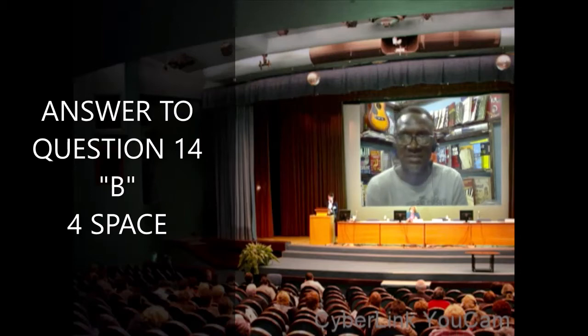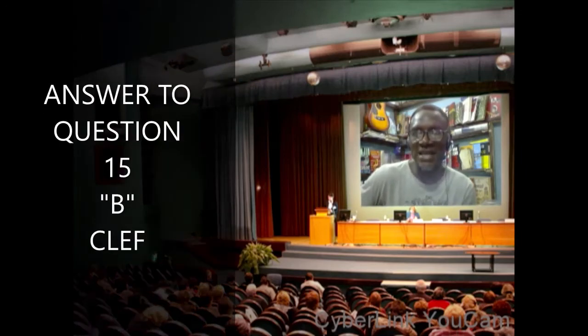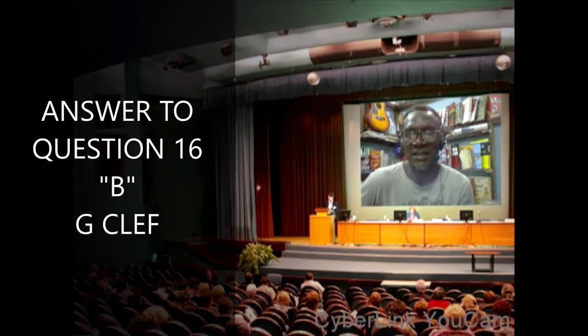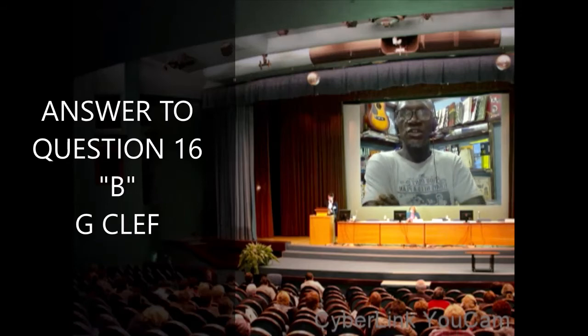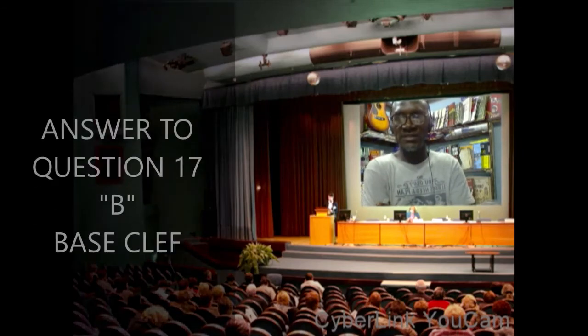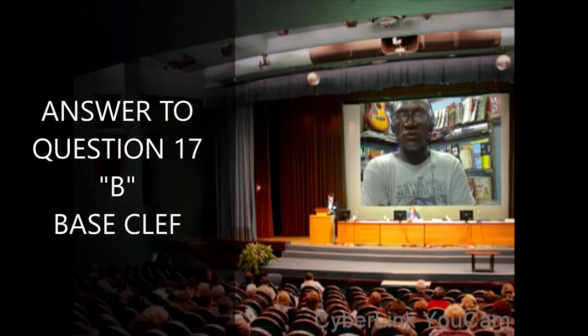Question number fourteen: a staff consists of dash space — the answer is B, which is four spaces. Question number fifteen: dash is placed at the beginning of a staff — the answer is B, clef. Question number sixteen: the clef can also be called dash — the answer is B, which is G clef.